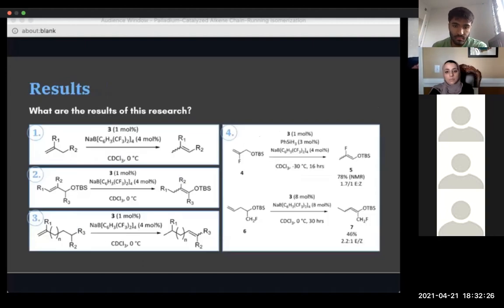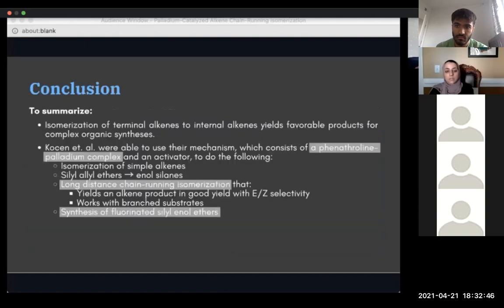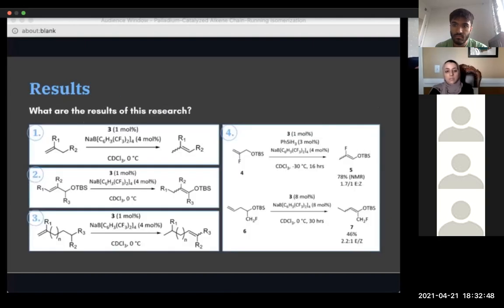Coming back to the actual scheme, we can see that Kostin and his team were able to use the catalyst and activator, as well as an additional silane activator, to transform an alkenyl fluoride to a fluorinated siloenol ether with good yield and easy selectivity, and this is shown in the isomerization of 4 to 5 in the right-side image. From the bottom right, the isomerization of 6 to 7 shows the production of a fluoromethyl substituted enol ether as well.